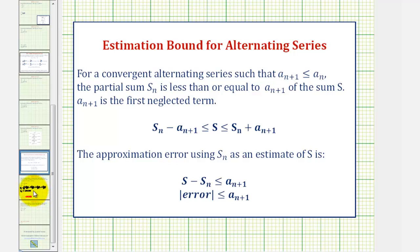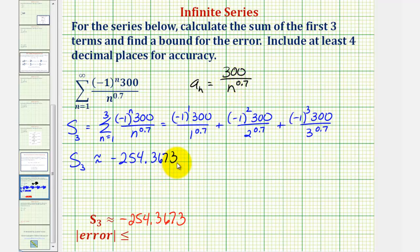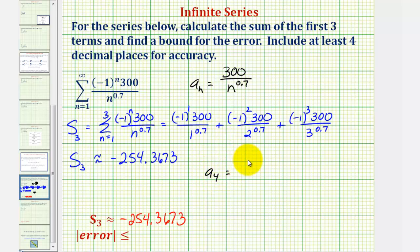Going back to our example, for the alternating series, A sub N is the non-alternating part, which would be 300 divided by N raised to the power of 0.7. And because we found the partial sum of the first three terms, the bound for the error can be found by determining A sub four. So A sub four would be equal to 300 divided by four raised to the power of 0.7.